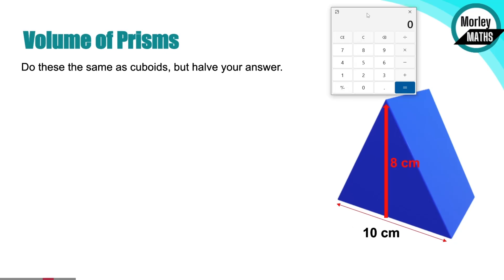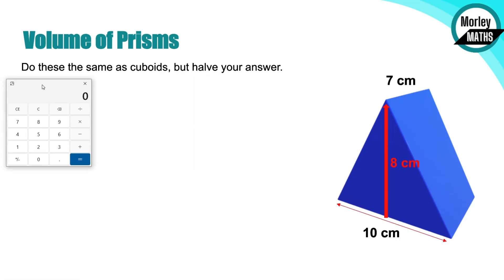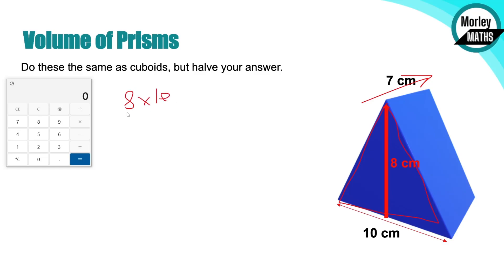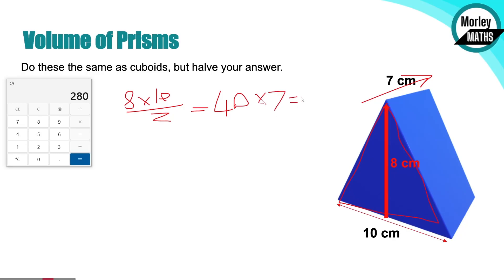What about prisms? We want to work out the area of one of the faces - the ends - and then times it by how far back it goes. For this you need to know the area of a triangle. The area of a triangle is the same as a rectangle but you halve your answer. So 8 times 10 divided by 2 gives an area of 40 for that triangle. Then times that by how far back it goes: 40 times 7 gives us a volume of 280 centimeters cubed.